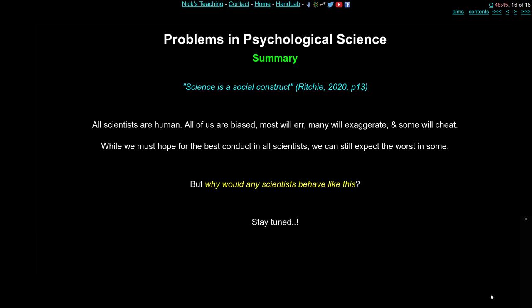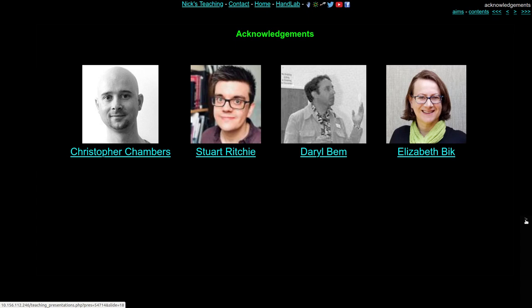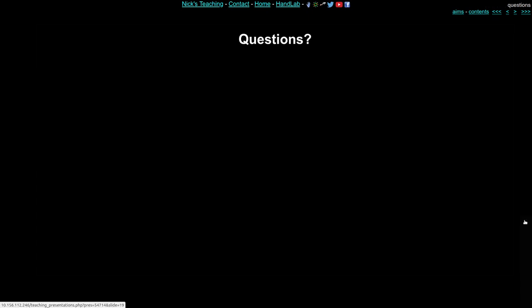As Ritchie says, science is a social construct. All scientists are human, all of us are biased, most will make mistakes, some will exaggerate, and a few will cheat. We should hope for the best conduct from scientists but remain careful and cautious, and expect that some will behave really badly. Why on earth would any scientist do this? Stay tuned — find out next lecture. If you have any questions, put them in the Q&A.